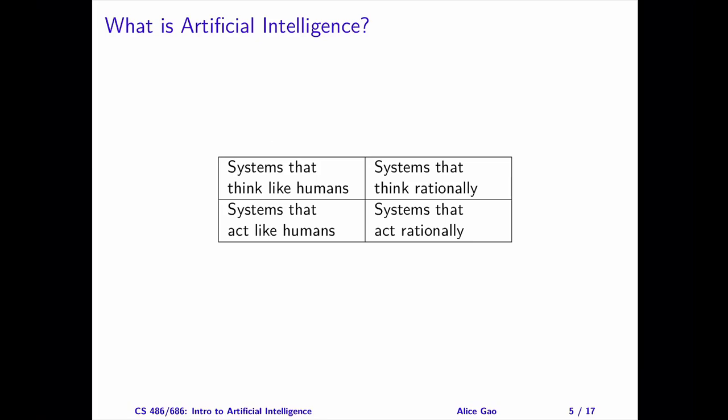First, let's look at the two columns. The two columns differ by how we want to measure the performance of the system. Do we want to measure the performance against humans, or do we want to measure the performance against rationality? If we use different performance measures, we'll tackle the research questions using various techniques.